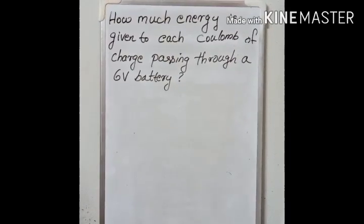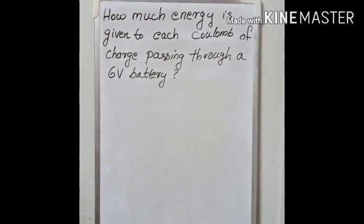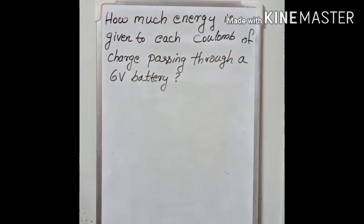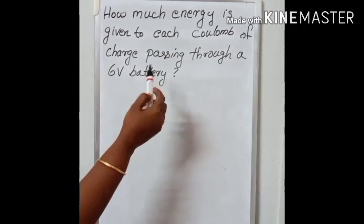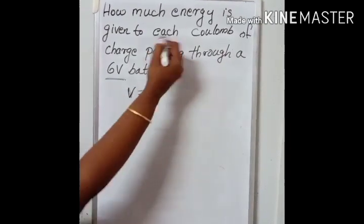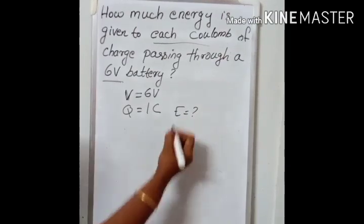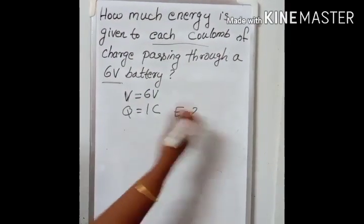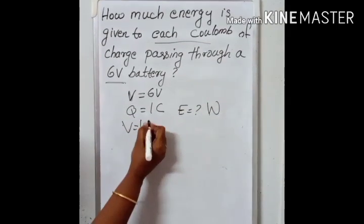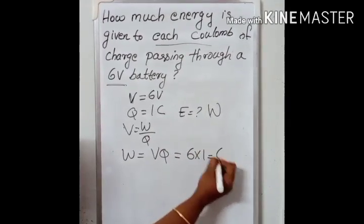The second question is: How much energy is given to each coulomb of charge passing through a 6 volt battery? Charge is passing through a conductor connected to a 6 volt battery. So how much energy is given to each coulomb of charge? Potential difference V = 6 volt. Each coulomb means charge Q = 1 coulomb. As per the work-energy theorem, energy is equal to work done. So we want to find out work done. V = W/Q, therefore W = V into Q = 6 into 1 = 6 joule.